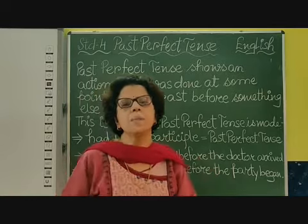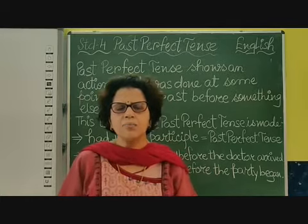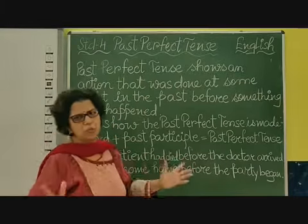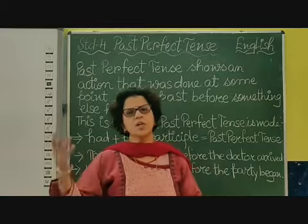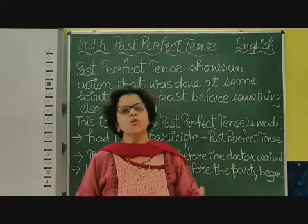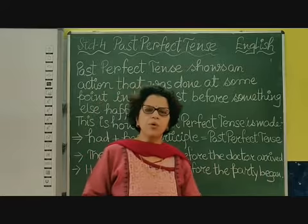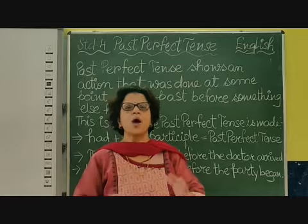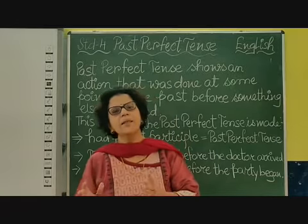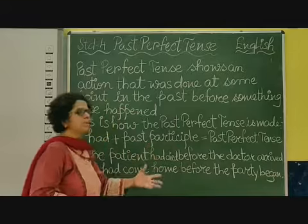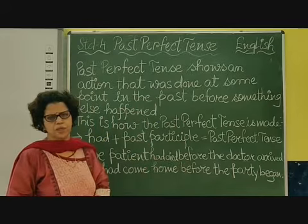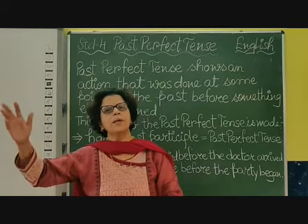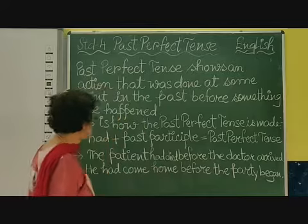You understood the point, children — when two actions had been done in the past and one action had been done before the other, that action you have to use the past perfect form of the verb. And the other one is simple past tense. So in past perfect form, the structure is 'had.' Here we don't have to worry whether it is singular or plural subject — we use 'had' for both. Subject plus had plus past participle form of the verb and then the object. That is the structure of past perfect tense.